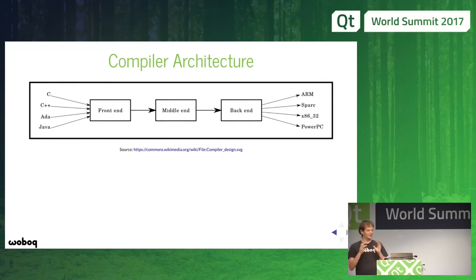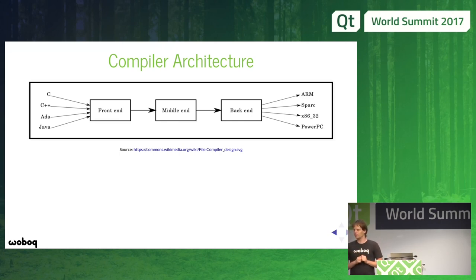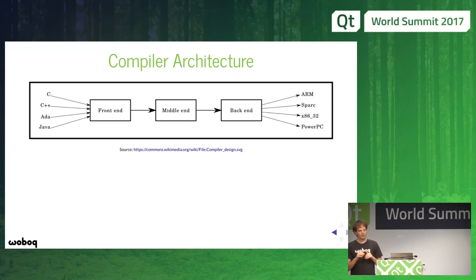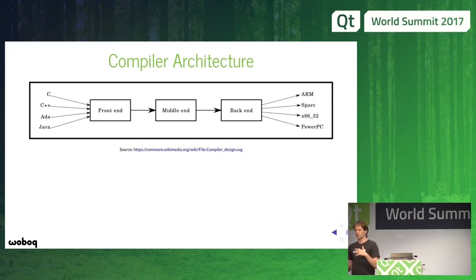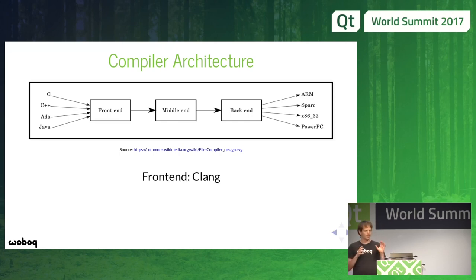This is the diagram from Wikipedia on how a compiler works. It's basically divided into several components. You first have the frontend, which takes input in the programming language and transforms it to some internal representation known to the compiler. Then you have the middle end, which can do a lot of optimization, and the backend, which produces the machine code — the executable. In this situation, Clang really is the frontend, and it takes C and C++ and generates LLVM bytecode.